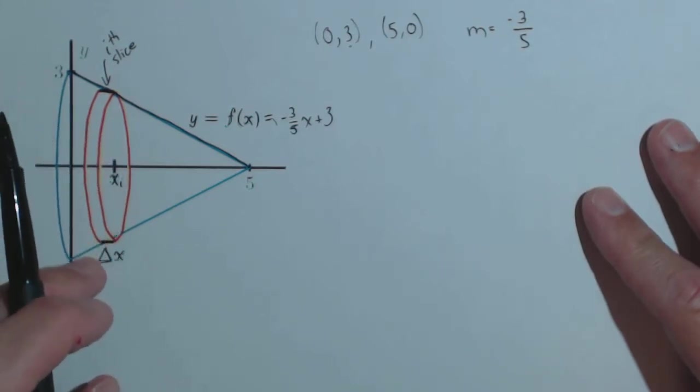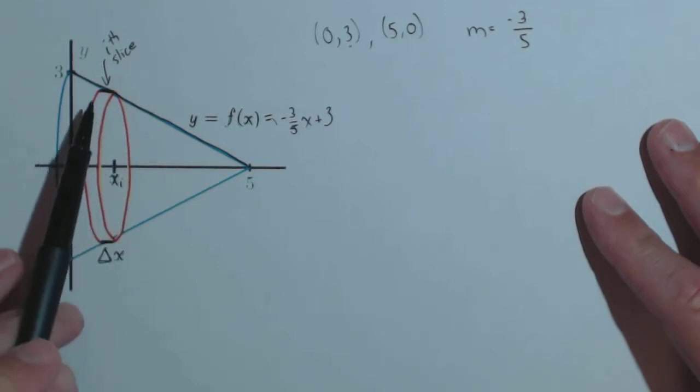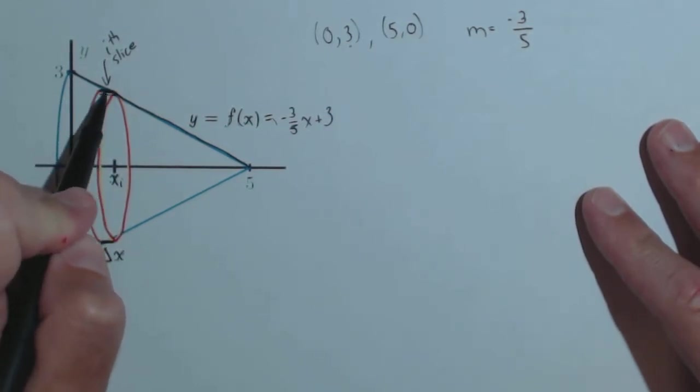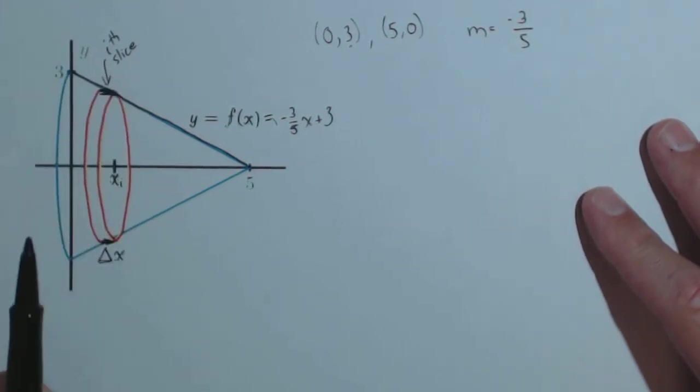Now, the shape of this i-th slice, if I were to pull it out, looks like a cylinder, because I'm choosing it small enough so that I can assume that these sides are straight up and down, that they're parallel to each other.